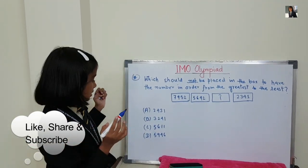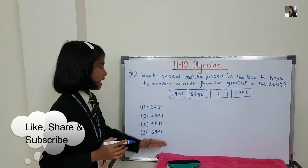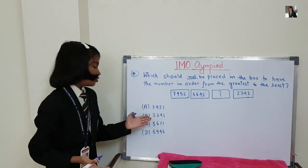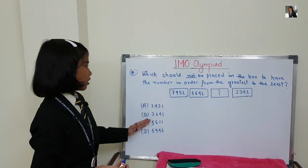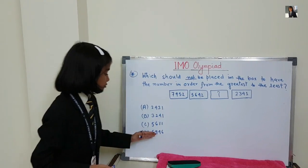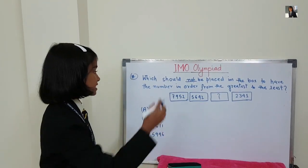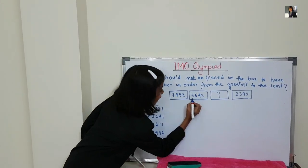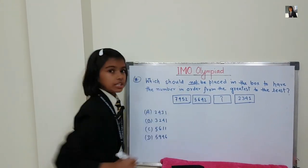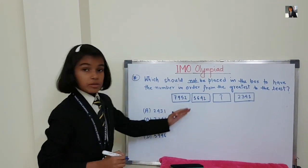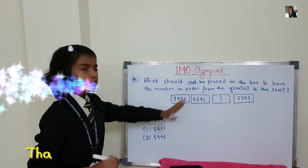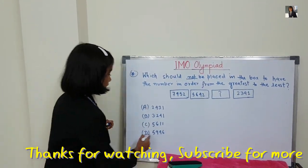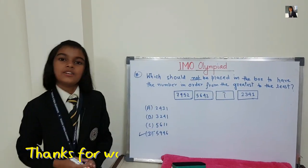Testing five thousand six hundred eleven — if we place this here it also forms descending order, so it is not the answer. But five thousand nine hundred forty-six — if we place this here, it will not form descending order, because five thousand six hundred forty-two comes next and it would be greater than five thousand nine hundred forty-six, breaking the descending sequence. So the answer is D.